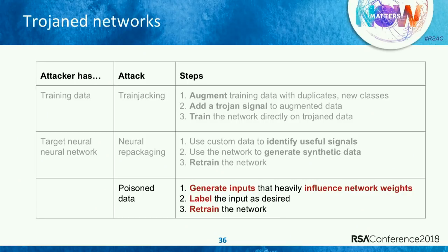Third case: rather than backdooring the network myself, what if I could get you to backdoor your own network, and then just piggyback off your users? This is possible because to train your neural network, you're very heavily dependent on your training data. If I can poison that data, I can effectively poison your network. The way I do this is very similar to generating adversarial samples — except instead of manipulating the output, I'm generating adversarial samples that will manipulate your weights, specifically targeting the class I care about. Studies seem to suggest it takes less than maybe 3% of the data.